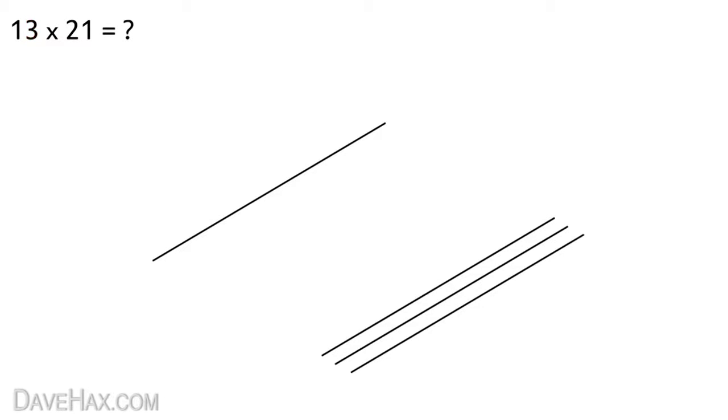After the multiplication sign the first number we have is 2 so we draw two lines next to each other from here to here and the final digit is 1 so we draw one line from here to here. That's the first part complete and it should look something like this.